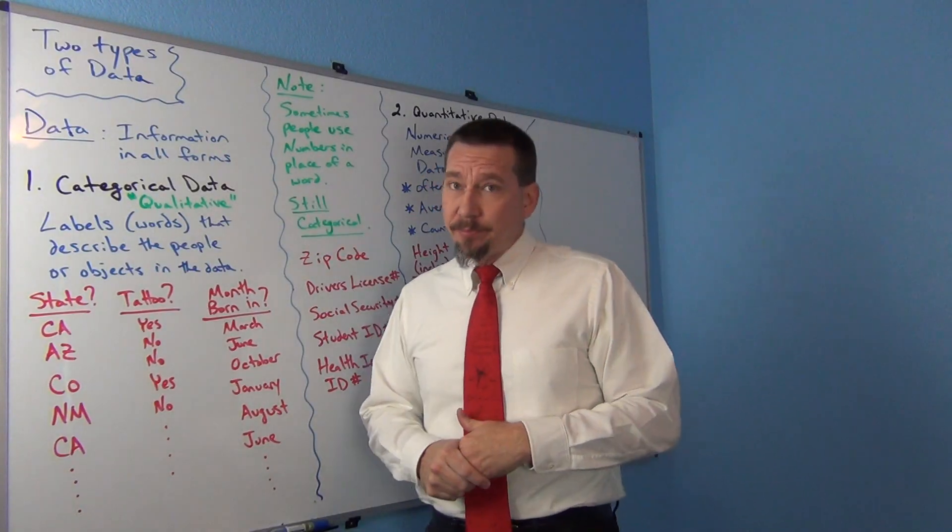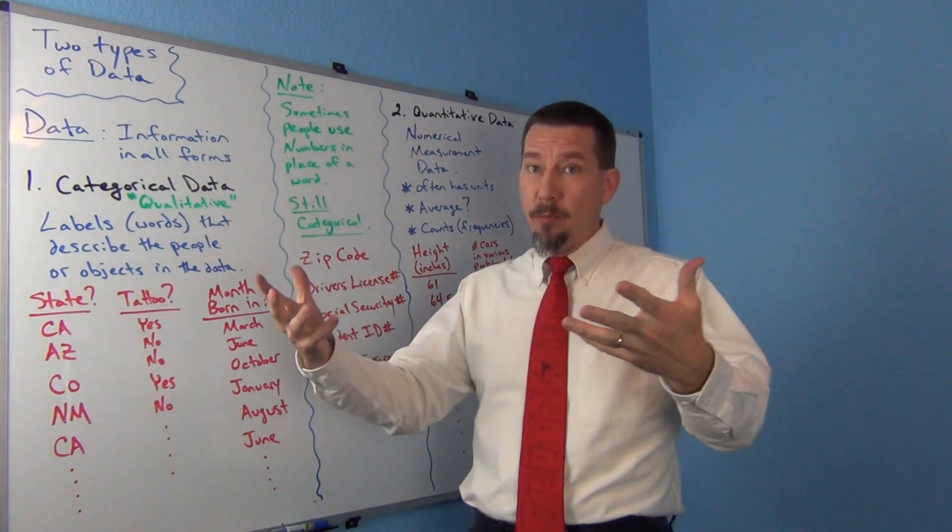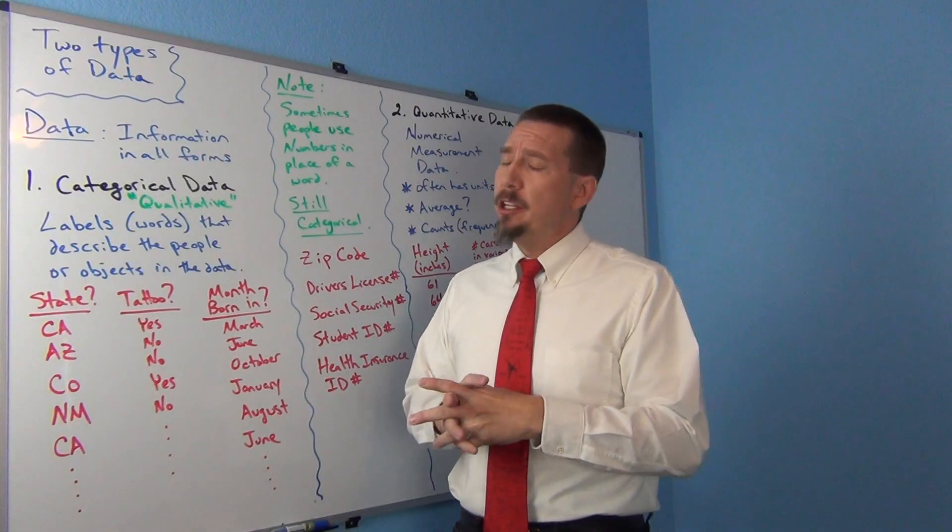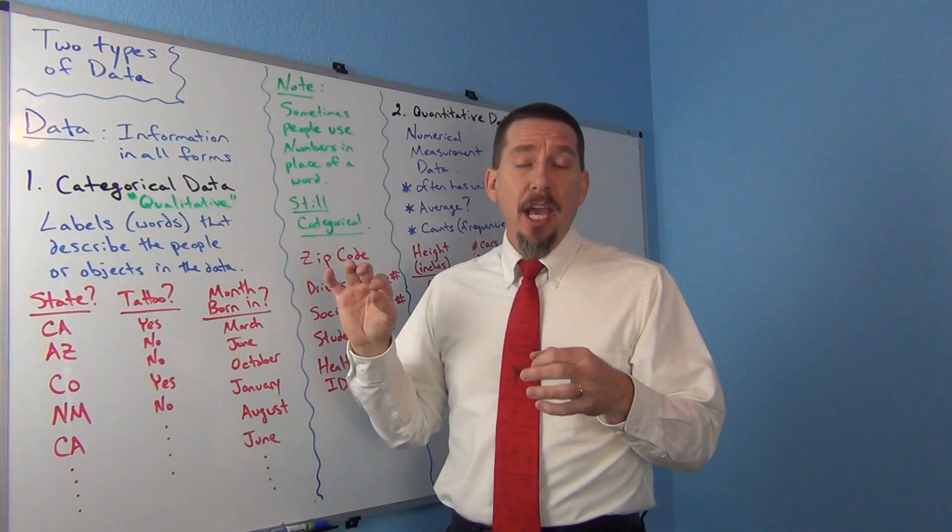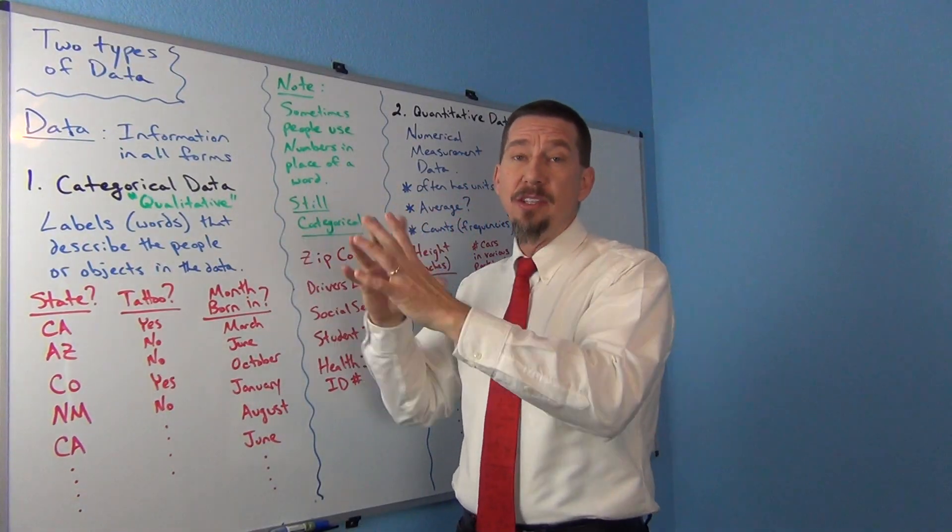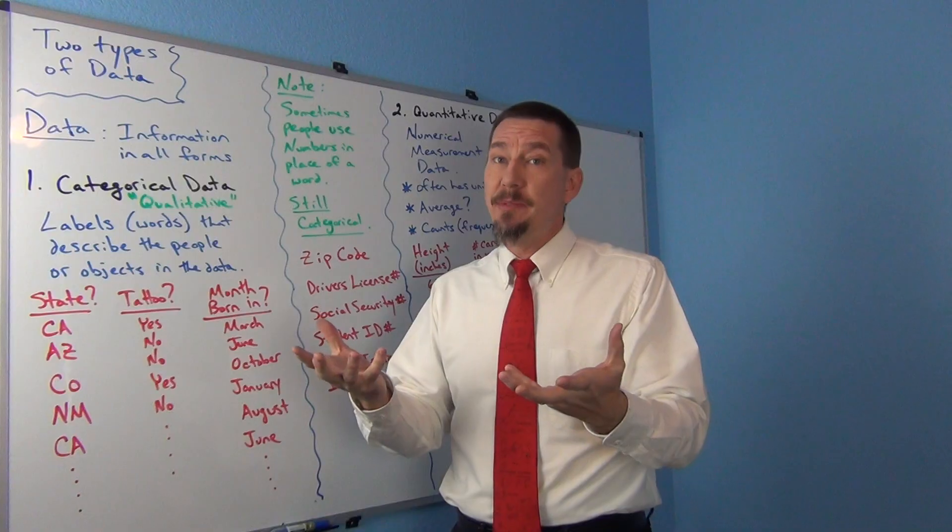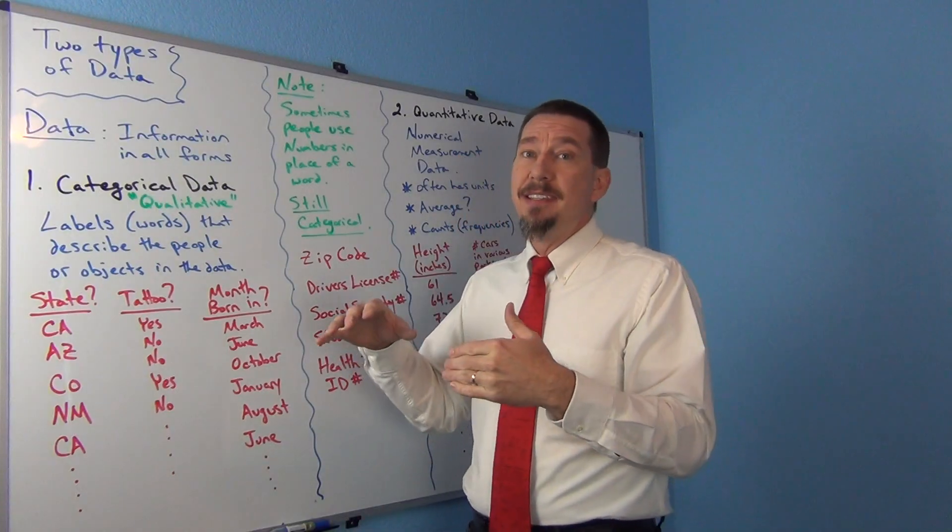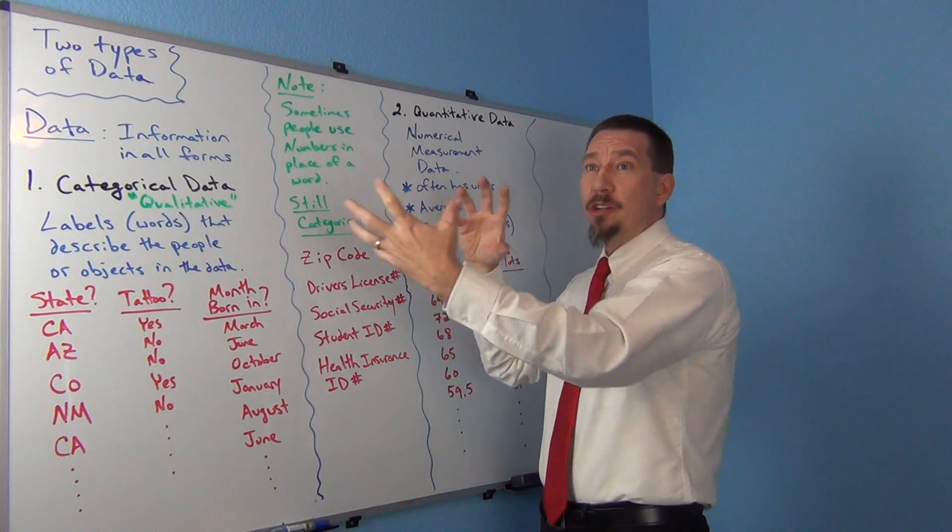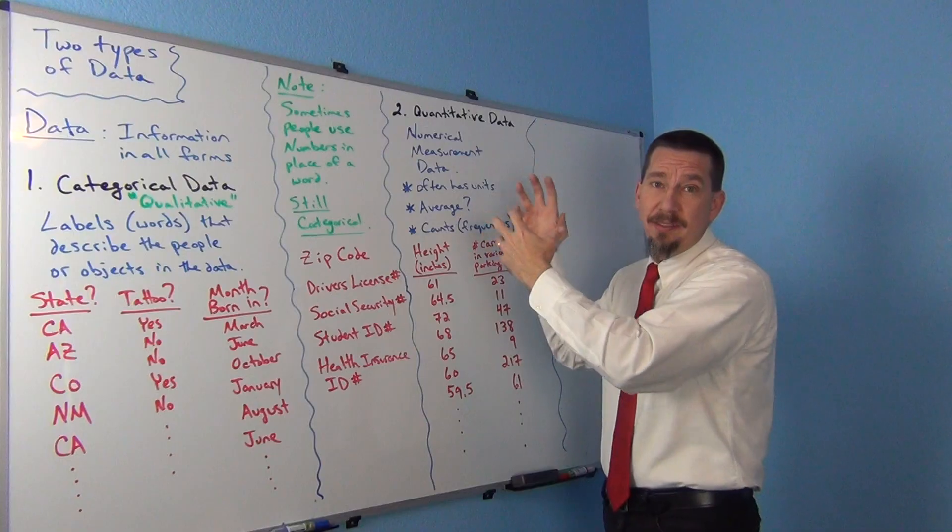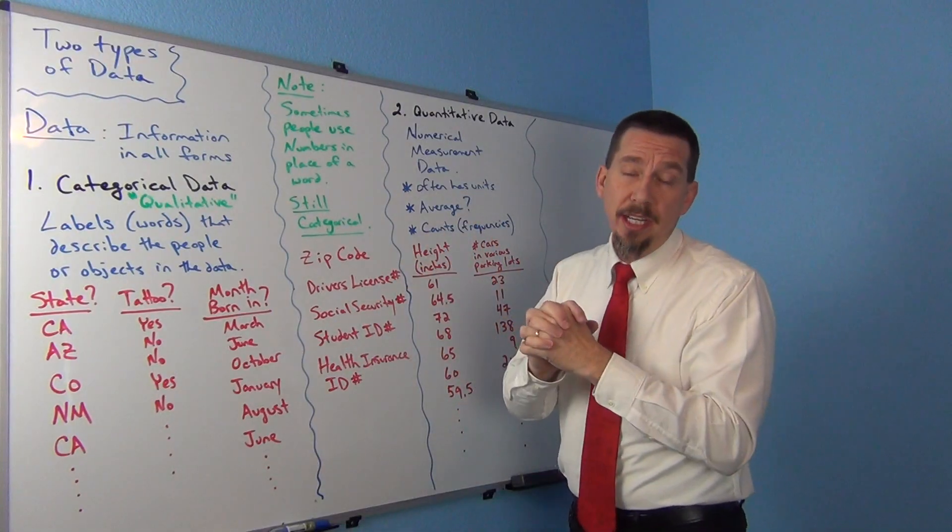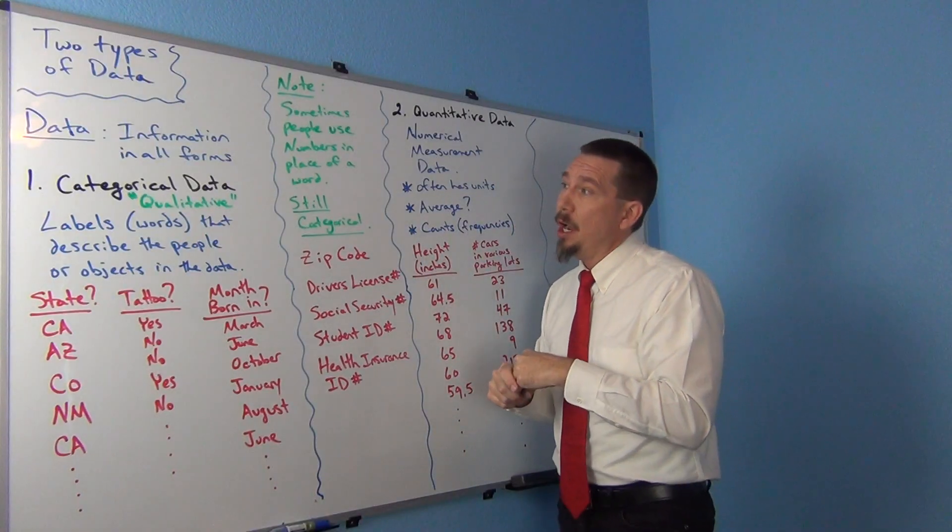One of the key things that we talked about was analyzing data. So we said last time that data is thought of as information in all forms. And today we're going to learn that there's two main types of data. Now this is actually super important.